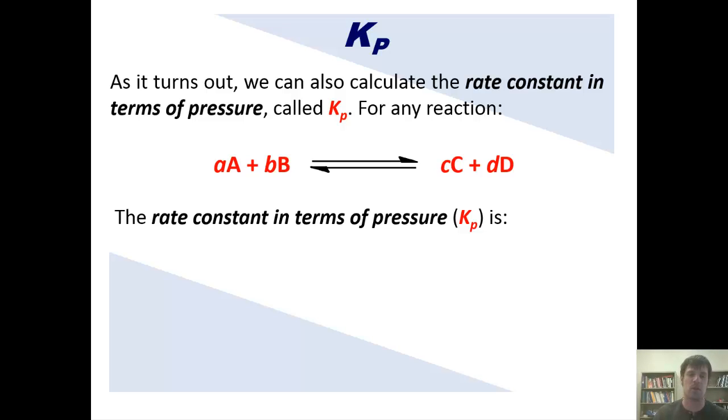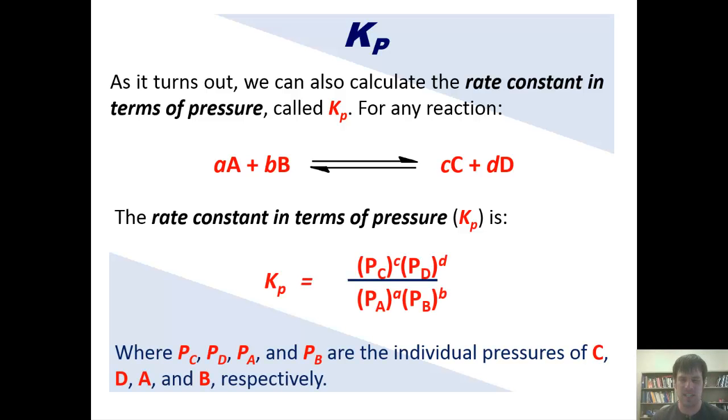the rate constant in terms of pressure, Kp, is equal to this. Where PC, PD, PA, and PB are the individual pressures of gases C, D, A, and B respectively.